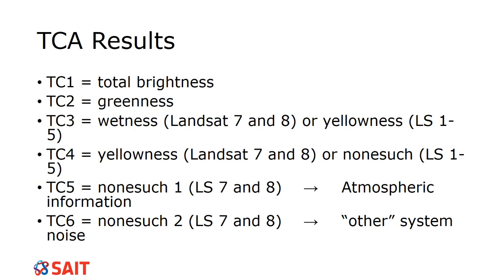TC4 for Landsat 7 and 8 is now yellowness — how ready for harvest is the crop — whereas for the older versions, Landsat 1 through 5, it's called nonsuch, meaning anything that does not contribute to the agricultural status of that crop. TC5 and TC6 are only found in Landsat 7 and 8 and are both nonsuch — TC5 contains atmospheric information and TC6 contains other noise.